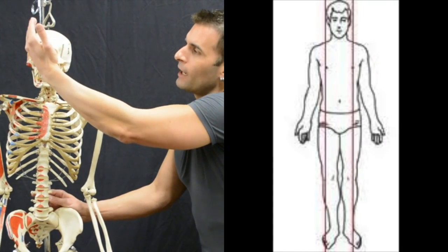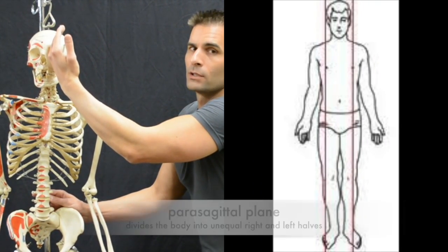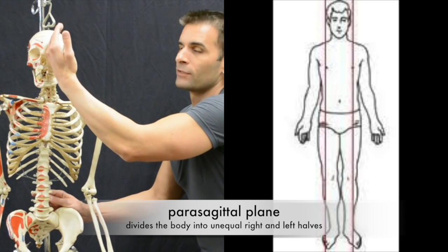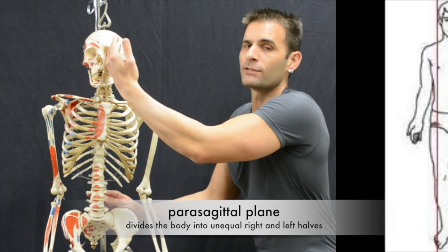If I move that cut to the left or right in either direction, just off of the center, it's considered a para-sagittal section.